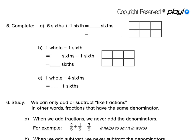For 5, we have 5 sixths. I'm going to shade in 5 sixths here — 5 out of the 6 parts. And then we need to still add 1 sixth to that. So that means we've shaded 6 sixths, or the whole rectangle. So 6 sixths, or 1 whole, is our answer.